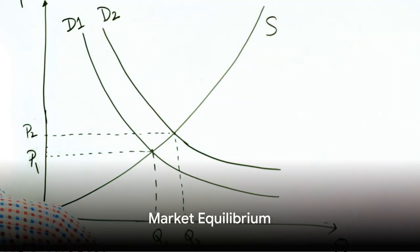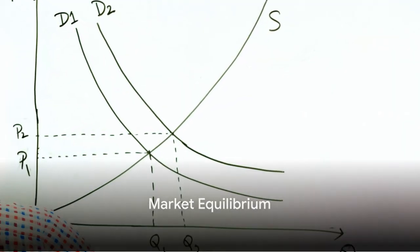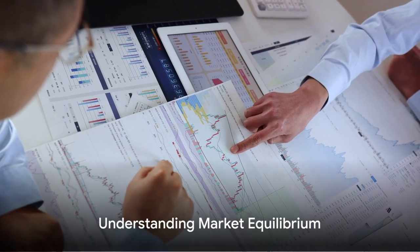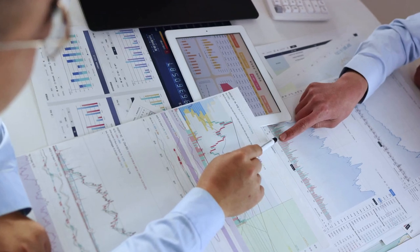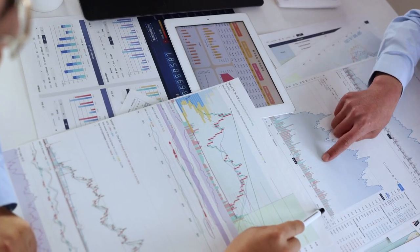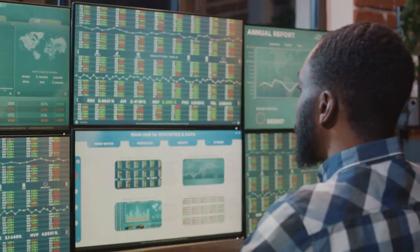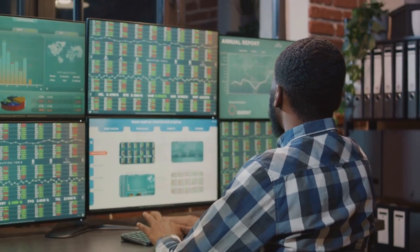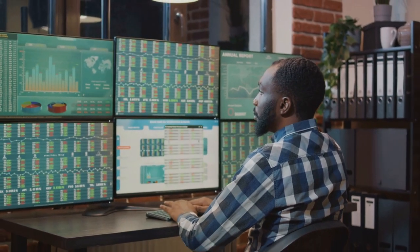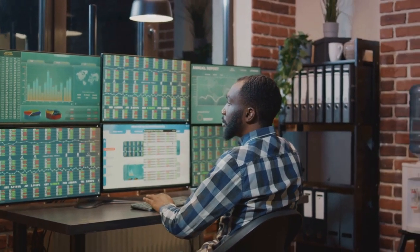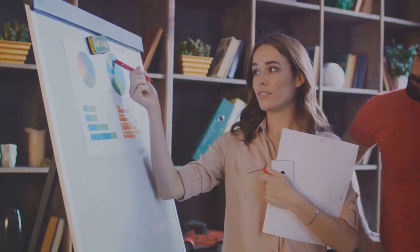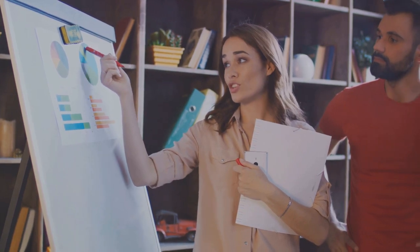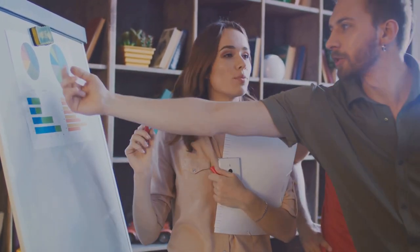What happens when the amount consumers want to buy equals the amount producers want to sell? Well, my friends, we have arrived at a fascinating concept known as market equilibrium. Market equilibrium is like a perfect dance between supply and demand. It's the point where the amount of goods or services that businesses are willing to sell aligns with the amount that consumers are willing to buy. And at this point, the price of the product or service is just right. It's not too high to deter buyers nor too low to discourage sellers.